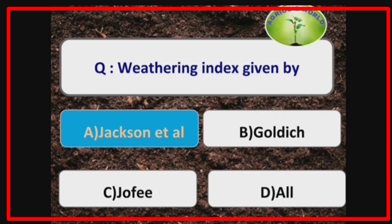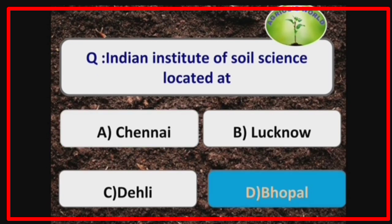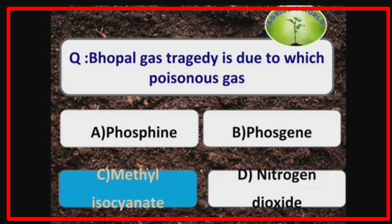Weathering index is given by the scientist Jackson et al. Indian Institute of Soil Science is located at Bhopal. The Bhopal gas tragedy is due to the poisonous gas methyl isocyanate.